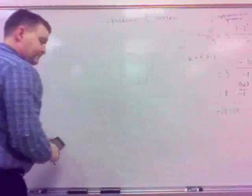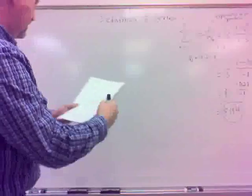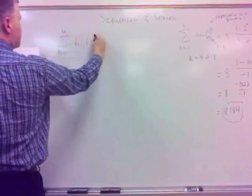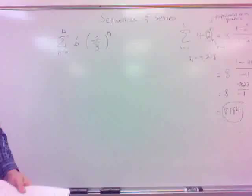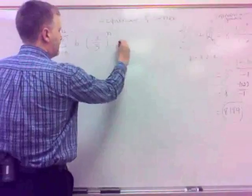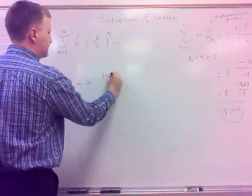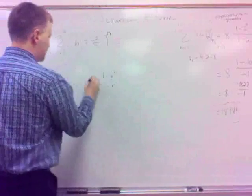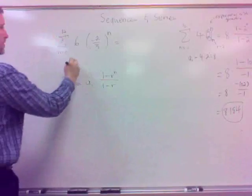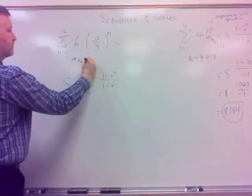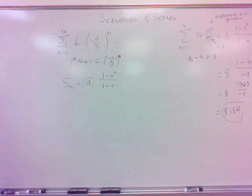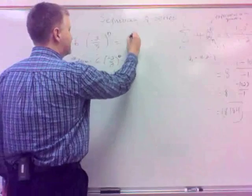Do one more of those. If I take the sum n equals 0 to 12 of 6 times negative 2 thirds to the nth. Also geometric, because it's exponential. And so I can apply the formula S of n, a1 times 1 minus r to the n over 1 minus r. How does this one start? Well, the first term, that's one point here. The first term is not n equals 1. It's n equals 0. So I plug in n equals 0 there for the first term. And I get negative 2 thirds to the 0. But that's really nice because what's anything to the 0? 1. So that's 6 times 1, so that's 6.